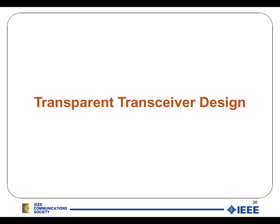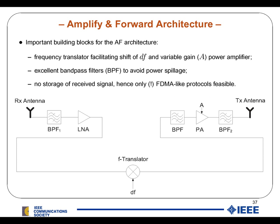For the transparent transceiver design, the most famous protocol is the Amplify and Forward protocol. It has a receive antenna where the signal arrives, after which it is bandpass filtered to eliminate spurious noise, followed by a low noise power amplifier. It then goes to a frequency translator where the frequency is translated by a certain amount Delta F, again bandpass filtered, then power amplified with a variable gain power amplifier, and another bandpass filter before transmission from the transmit antenna.